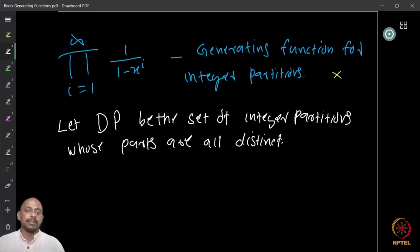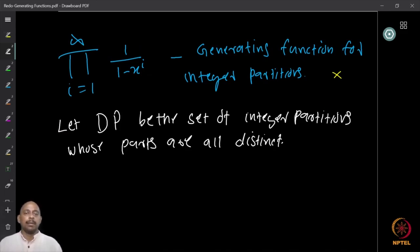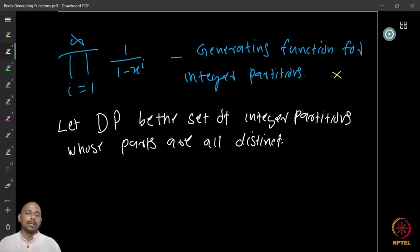We start with something we have already seen: the generating function for integer partitions. We proved that it is the product from i equal to 1 to infinity of 1 over (1 minus x raised to i). Now let us define DP to be the set of integer partitions whose parts are all distinct — so DP stands for distinct partitions.